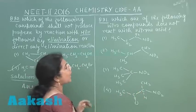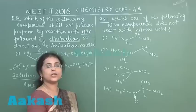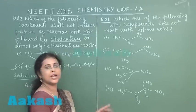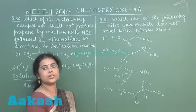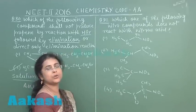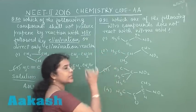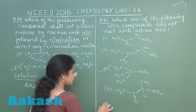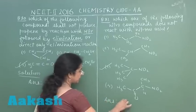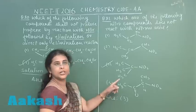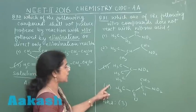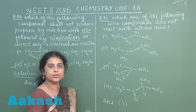As we know, primary nitro alkane reacts with nitrous acid, secondary nitro alkane reacts with nitrous acid, but tertiary nitro alkane does not react with nitrous acid and the correct answer should be option 3. So being a tertiary nitro alkane, the correct answer of the question is option 3.